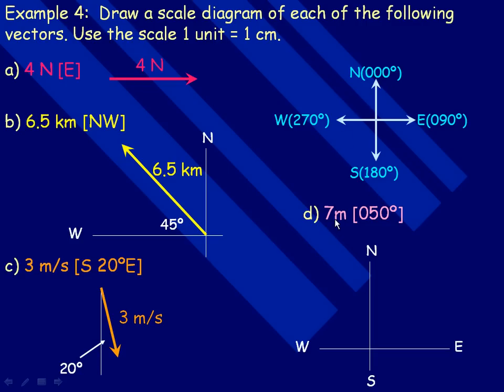So for example, in D here, if I were to draw a 7 meter vector at a bearing of 50 degrees, the angle from straight north, or true north, that would be the 50 degrees. And of course, I would draw this, the 7 meter vector would be 7 centimeters long here. That's the scale we're using.